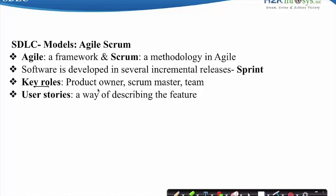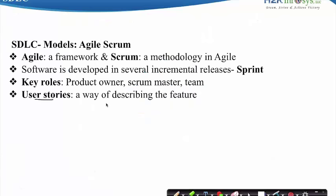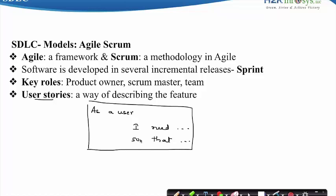There are three key roles in Agile Scrum. The Product Owner defines features needed in the product and provides ideas for the project. The Scrum Master protects the team and process, and is responsible for running the meetings and keeping the project going. The team develops the software and involves the BA, the developer, QA, and so on. User Stories are a way of describing a feature in the format: 'As a user, I need something so that a certain thing can be achieved.' User Stories allow Product Owners to specify the right amount of detail for the team to estimate the size of the task.